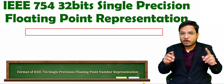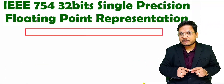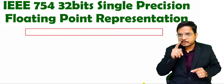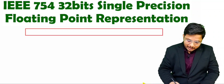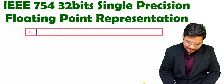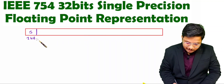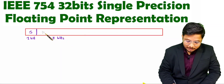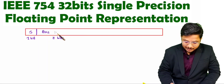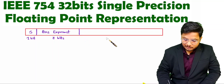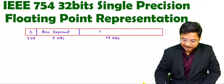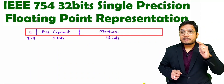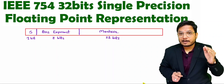First you need to understand the basic format of IEEE 754 single precision standard. That format includes 32 bits. Out of 32 bits, the first bit explains the sign. After that you will have another 8 bits for the exponent — this is the bias exponent. And after that you will have 23 bits of mantissa. So there are three fields: sign bit, bias exponent, and mantissa.